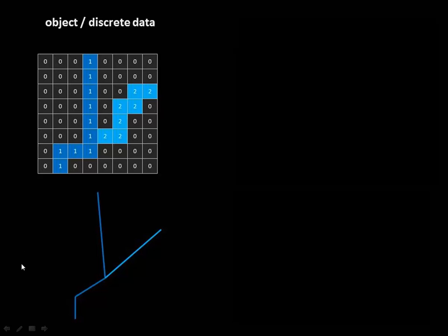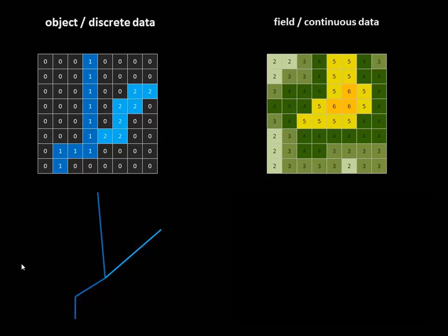What about the other example of temperature or elevation? That's what we call field or continuous data — the idea that there is something measurable at any location across the entire landscape. Everywhere has a temperature. For continuous data, we could use a raster so that every value in the raster has a geographic location and records the value — maybe this is rainfall instead of temperature or elevation. Start getting your mind around these two different types: objects like rivers, buildings, and town boundaries, and fields like elevation, temperature, or rainfall.